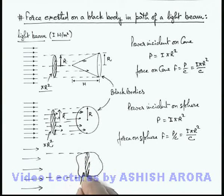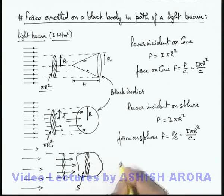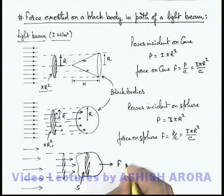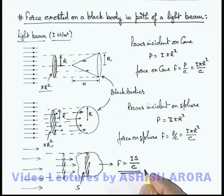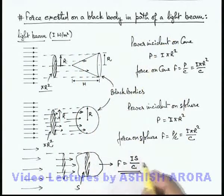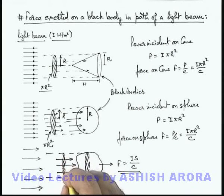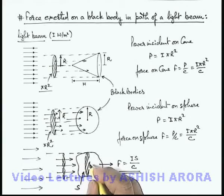...which is equal to the cross section of this body. If it is of area S, then we can directly say the power which will be incident on this body will depend only on the cross sectional area of the beam. We can directly state the force exerted by the light beam on this body will be equal to I multiplied by the cross sectional area S, divided by c. This is the way we can directly calculate the force exerted on a black body in the path of a light beam. For this we just need to calculate the cross sectional projected area of the beam in which all photons will be incident and absorbed by the body.